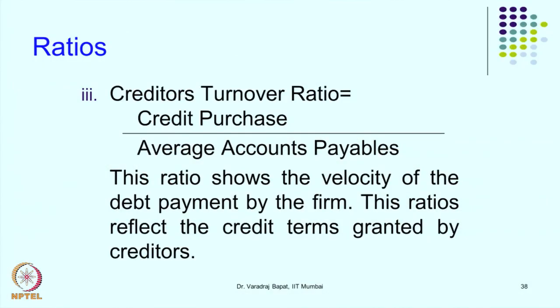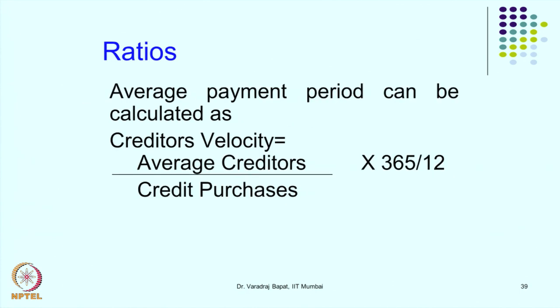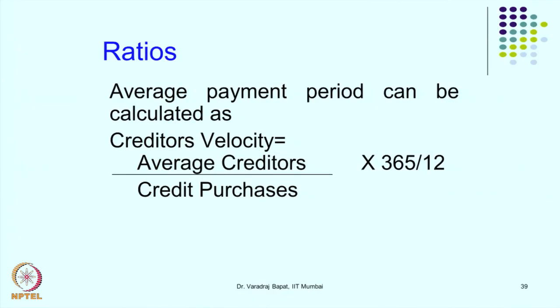These ratios are more useful for the management of the company. We also have the creditors turnover ratio — that is, credit purchases divided by average accounts payable. We can also calculate creditors velocity, that is how many days the company takes to make payment. We also know how many days of credit the company is getting, which in a way tells us about the reputation of the company in the market. If we want to take a credit decision, we can know the credit period that other people are giving that particular party.